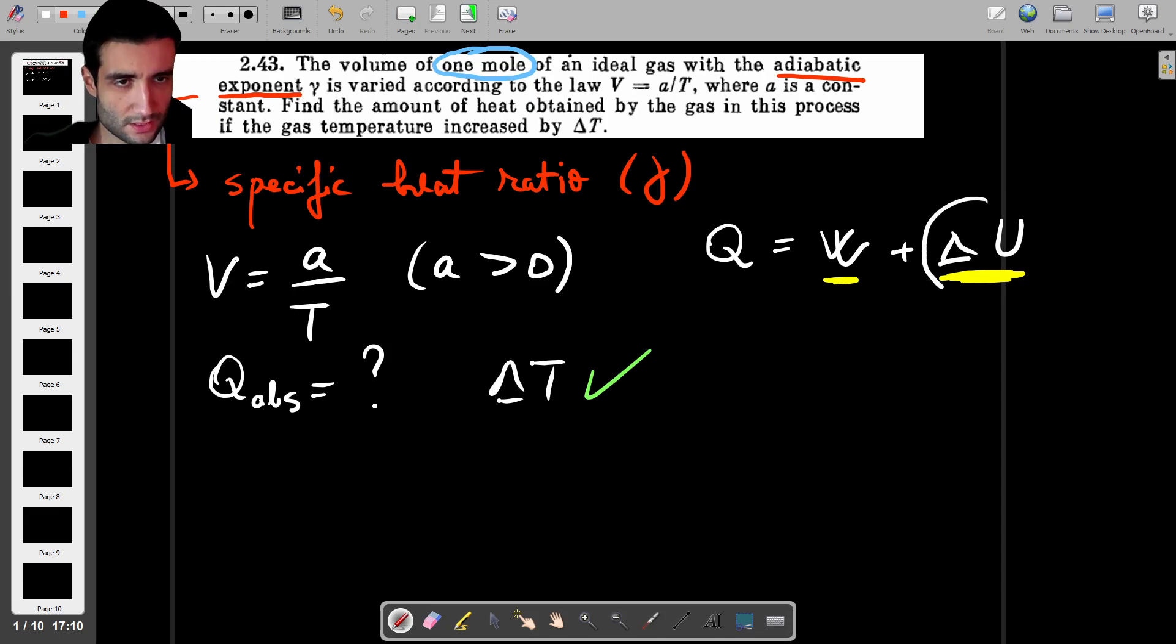So let's actually start with the delta U. So this is the change in internal energy which always has the formula N times Cv times delta T. So no matter which process you have, delta U is always the same because it doesn't actually depend on the process. It depends on the first and the last state. Actually it just depends on the change in temperature.